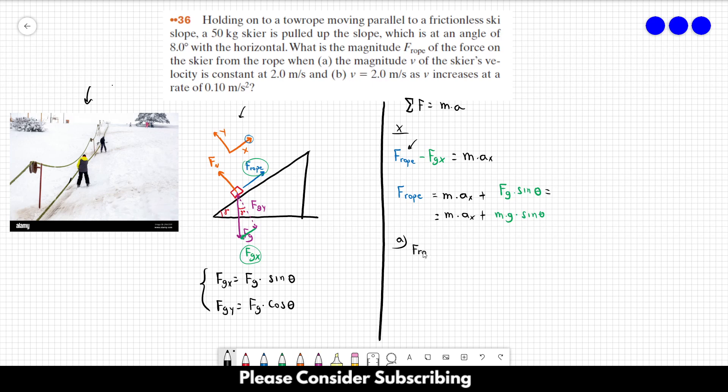F rope. We know that the acceleration is zero because the velocity is constant. We are not going to use this information, these two meters per second. These terms cross out for letter a.